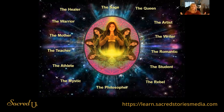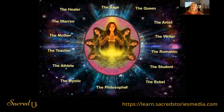All of us have these archetypes that live within us: the healer, the warrior, the mother, the teacher, the athlete, the mystic, the philosopher, the rebel, the student, the romantic, the writer, the artist, the queen, the sage. The more we can get in touch with these parts and use them wisely — we want the good queen, the wise queen that actually brings value to other people's lives, not the one that's high and mighty over everybody.